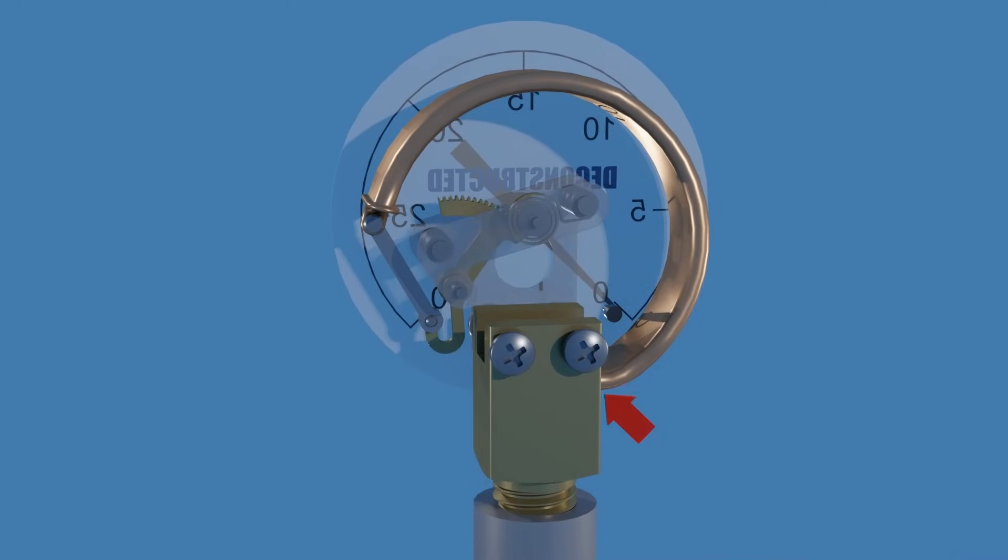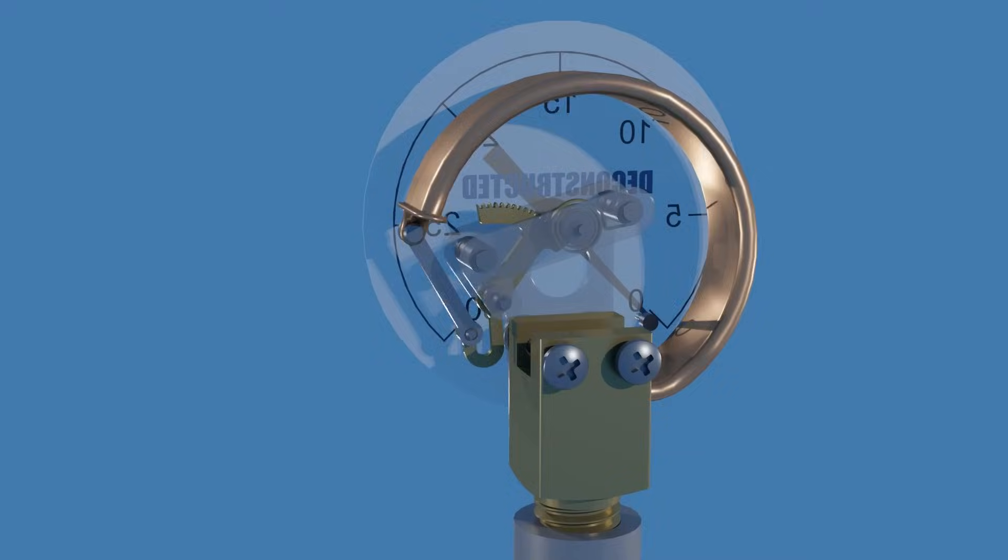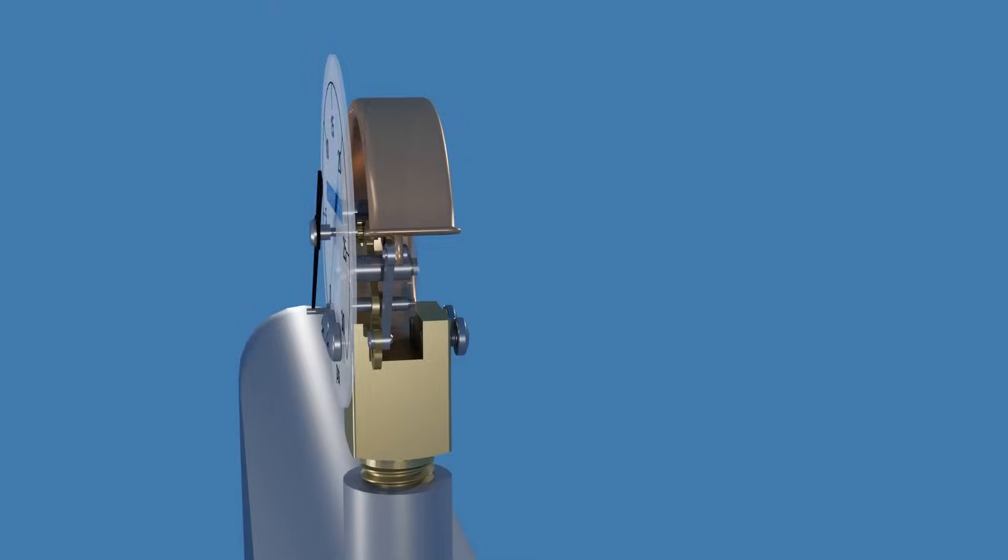The fixed end of the Bourdon tube is mounted to the socket base, and the moving sealed end is connected to a mechanism that translates the small deformation of the tube into a rotary movement for the pointer.